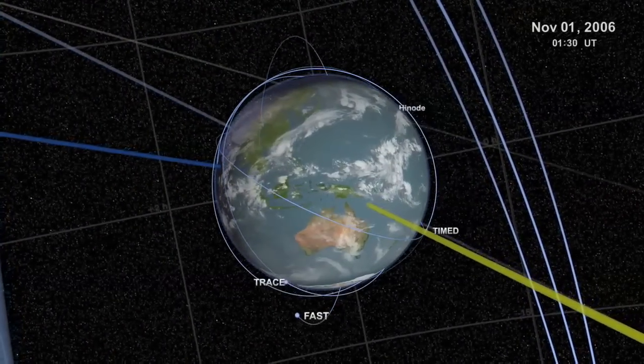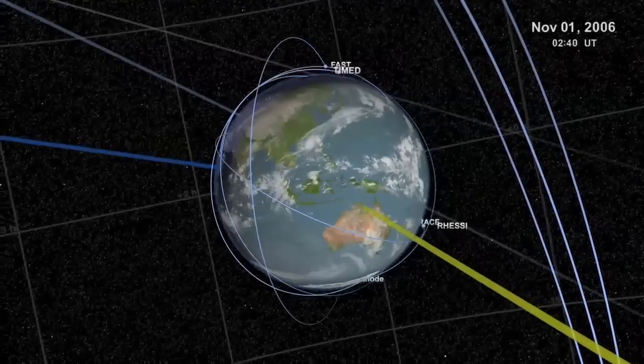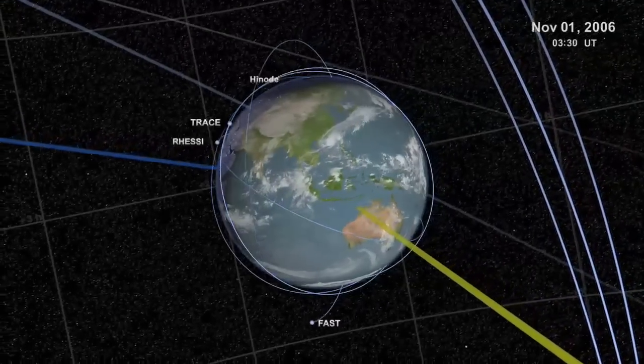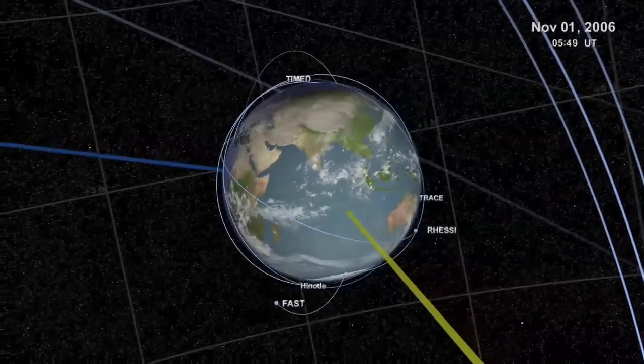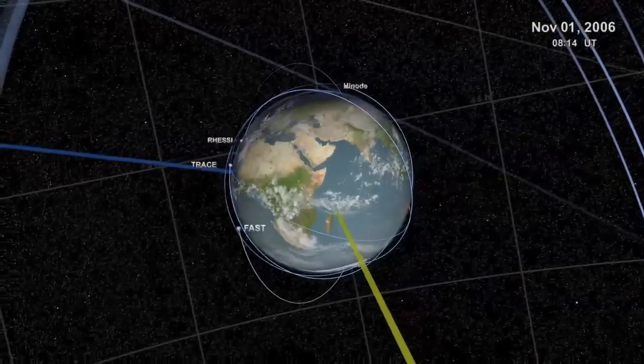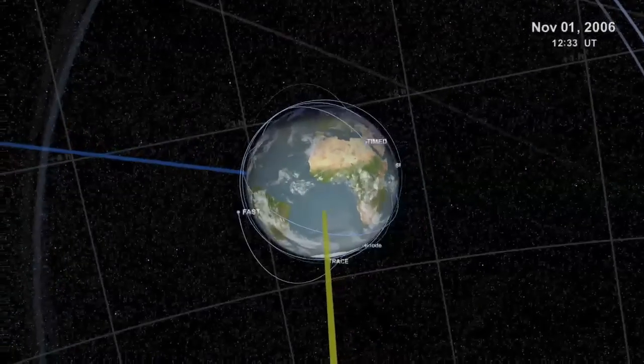These near-Earth satellites monitor solar activity, interactions with our planet's atmosphere and other aspects of the Sun's condition. You'll notice how they orbit the Earth quickly, about once every 90 minutes or so. Remember this, because the rate of time's passage will change as we move through the solar system.